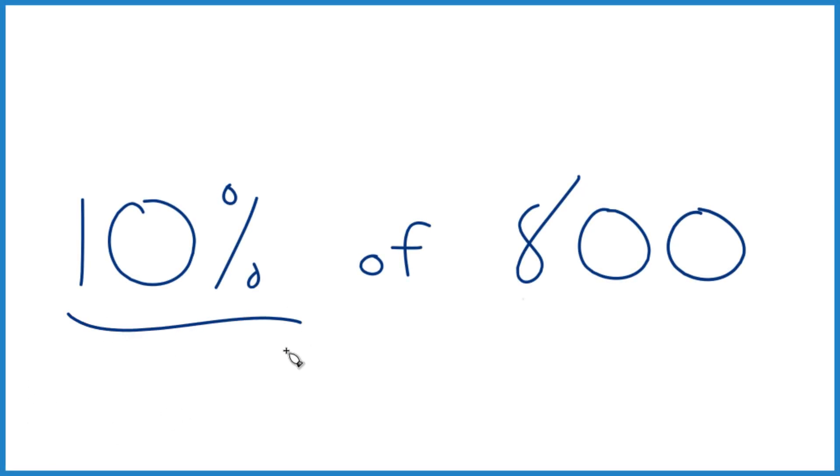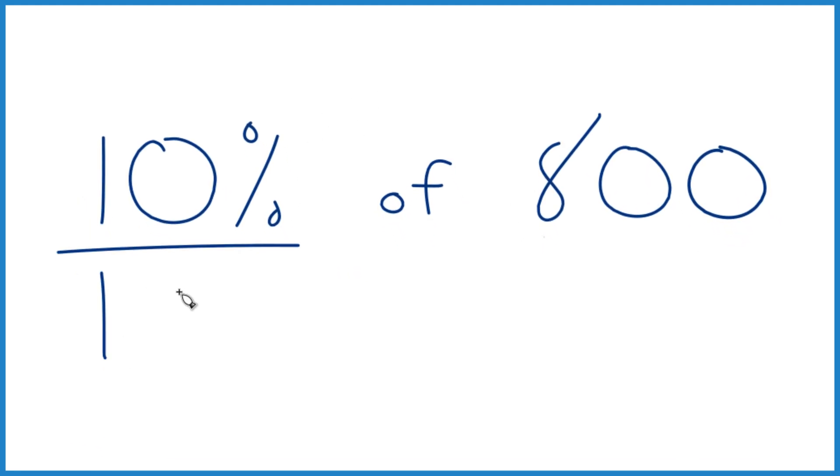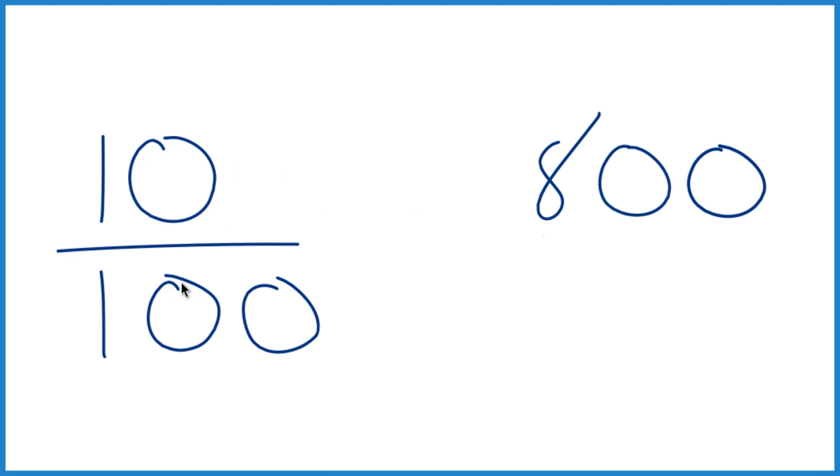Here's how you take 10% of 800. Let's go. Think of percent as over 100, so we have 10 over 100. And then think of that 'of' as multiplication.